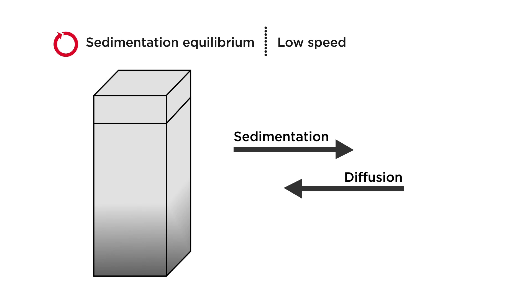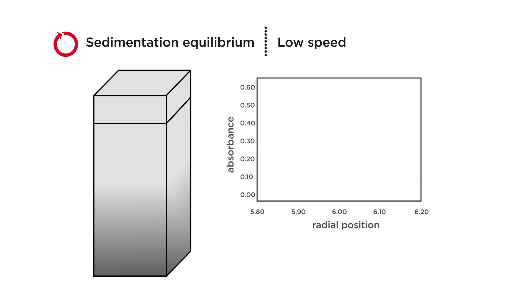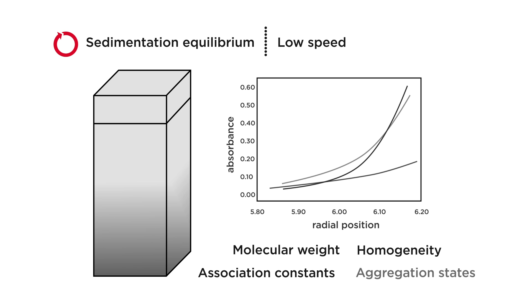The data is plotted as sample absorbance versus radial distance from the center of the rotor where the slope of the curve provides information on complex molecular weight. The distribution movement over time is used to calculate the molecular weight and homogeneity of the solution under study, as well as association constants and aggregation states.